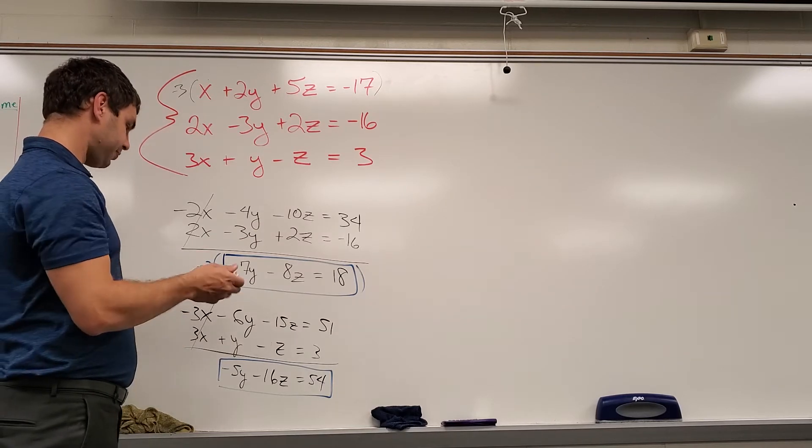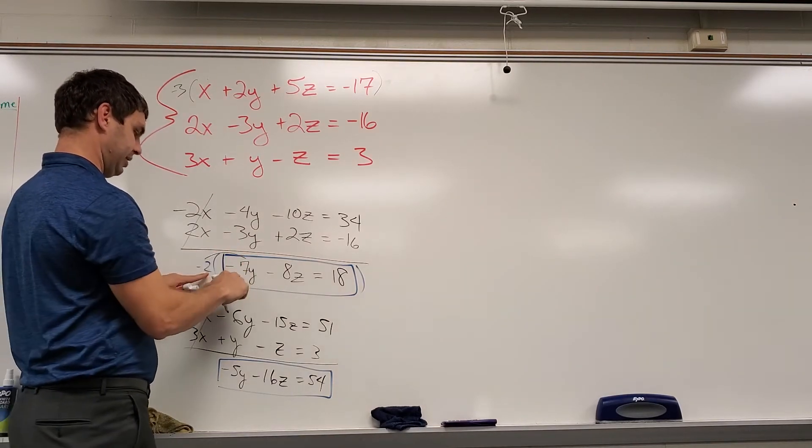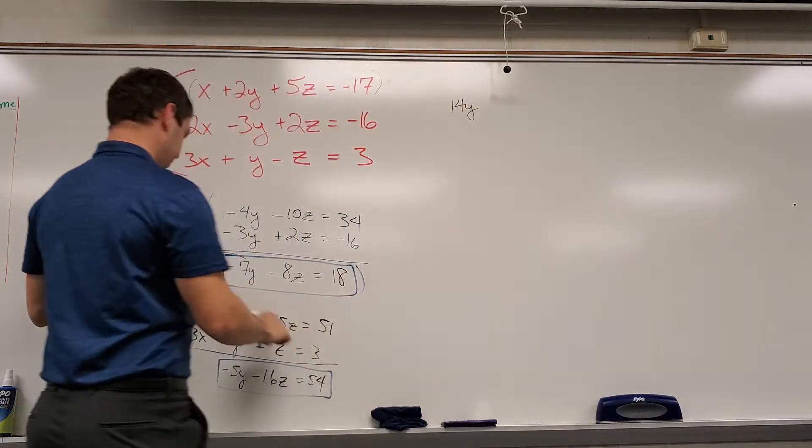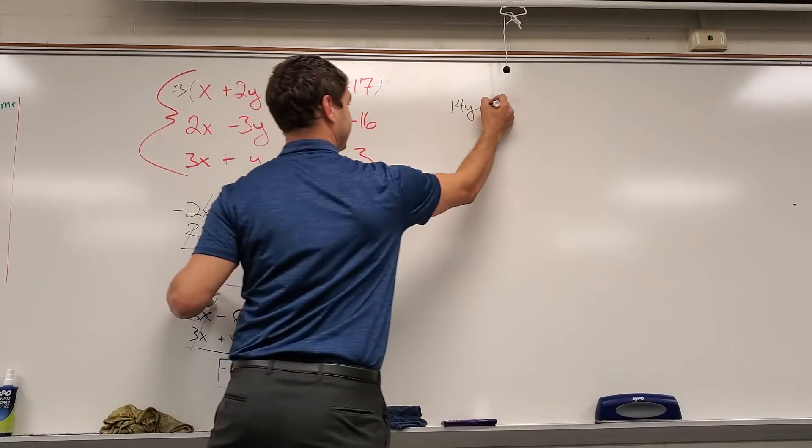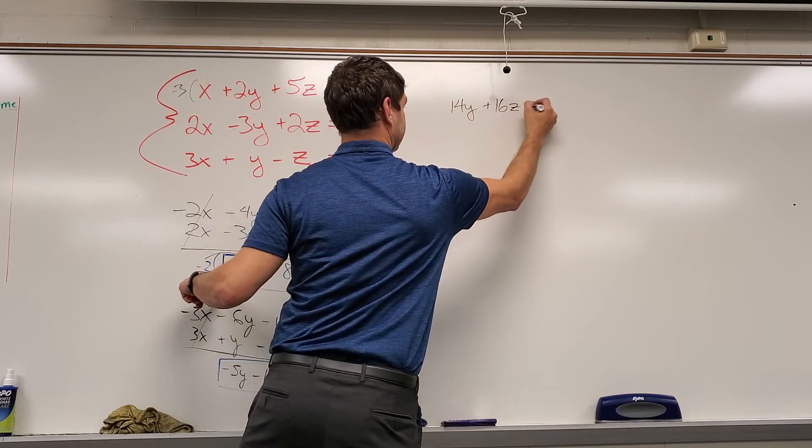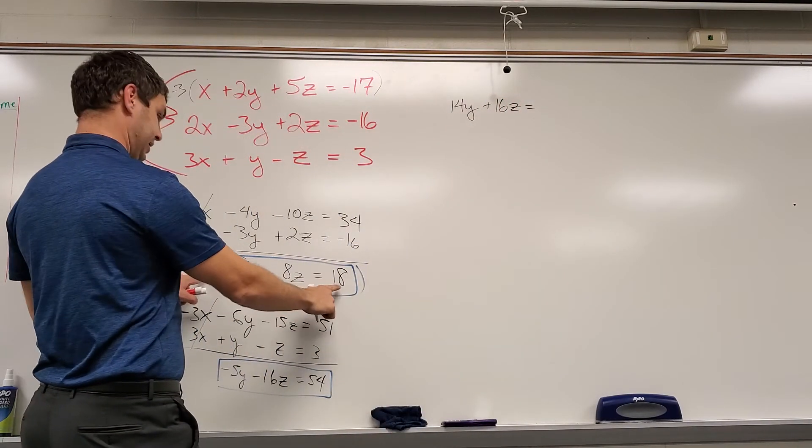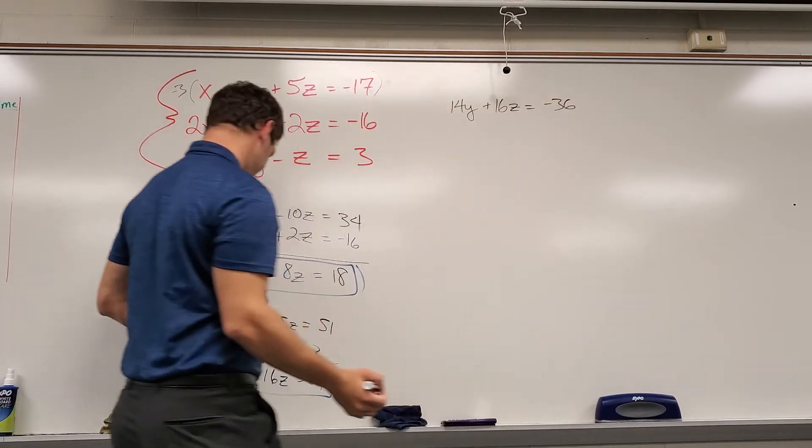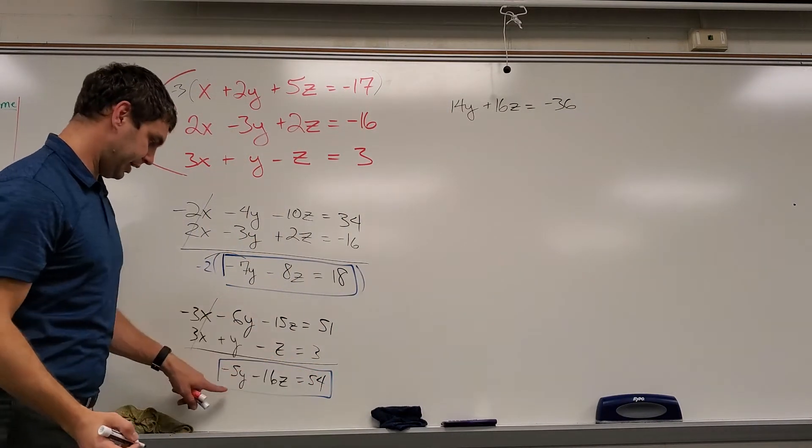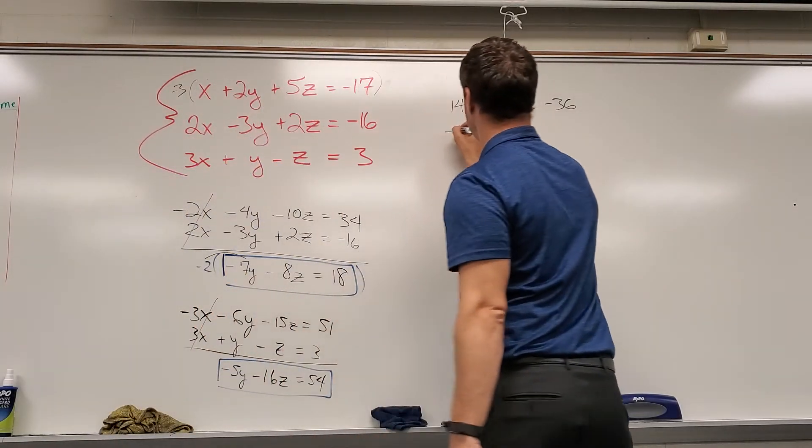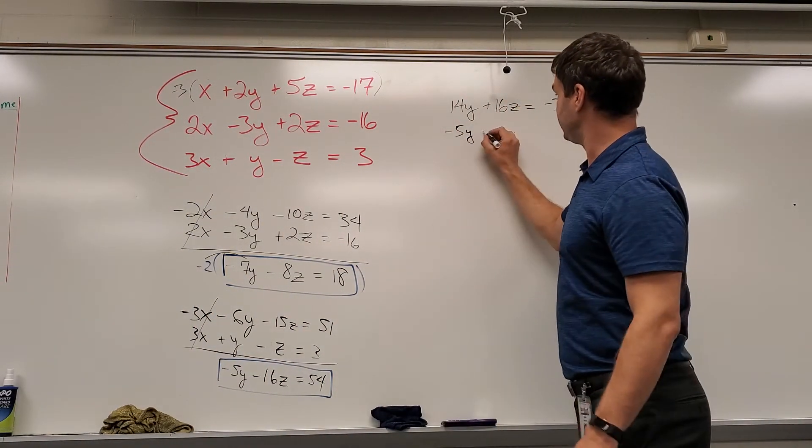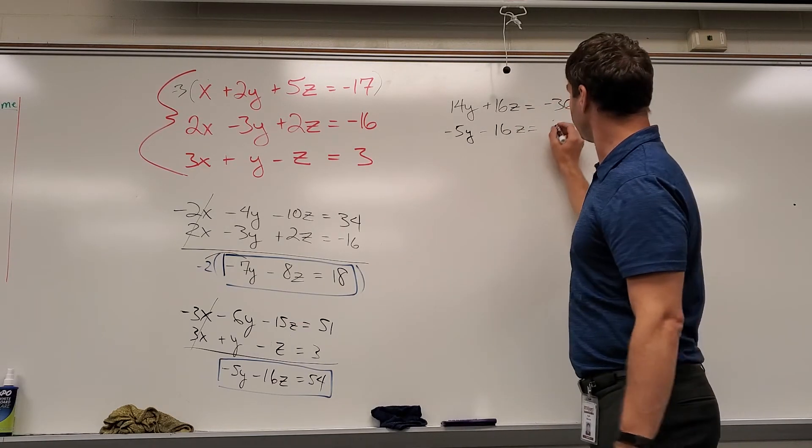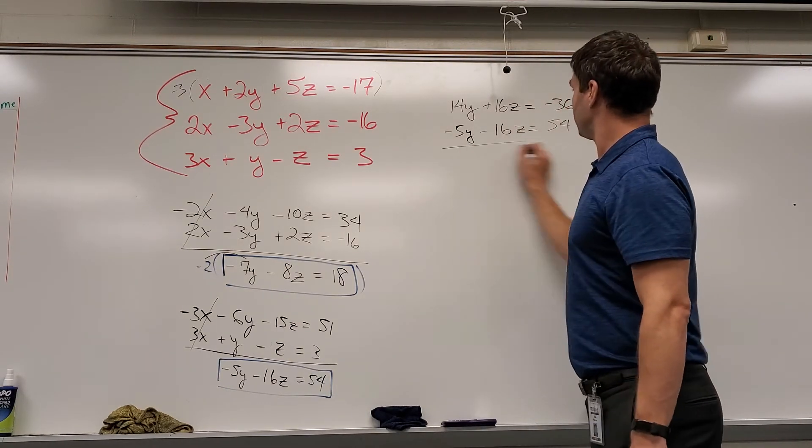Let's take this times negative 2. So negative 2 times negative 7y over here is 14y. Negative 2 times negative 8z is positive 16z, and it equals 18 times negative 2 is negative 36. All right. This one, I don't need to multiply it. Just rewrite it. Negative 5y minus 16z equals 54.